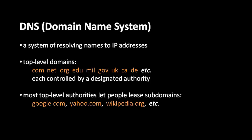In the case of country codes like .uk, it's fairly obvious who controls it — the United Kingdom government. .gov is controlled by the American government, .mil by the American military, .edu by an assortment of educational institutions, and .com, .net, and .org have been designated to a number of companies. The authority controlling a top-level domain allows other people to register a subdomain for a price — for example, google.com is a subdomain of the .com top-level domain.